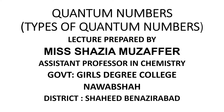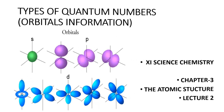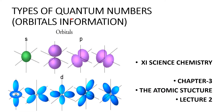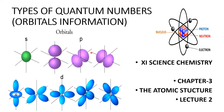I am Shazia Muzaffar, Assistant Professor in Chemistry Department from Government Girls Degree College, Nawab Shah, District Shaheed Benazirabad. Dear students, this is the continuation of my previous lecture on Quantum Numbers, or the addresses of electrons. Today I am going to provide you complete information about the orbitals with the help of types of quantum numbers. This topic is available in our Chemistry Book of First Year Science, Chapter 3, Atomic Structure.